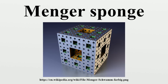Menger showed, in the 1926 construction, that the sponge is a universal curve, in that every curve is homeomorphic to a subset of the Menger sponge, where a curve means any compact metric space of Lebesgue covering dimension 1. This includes trees and graphs with an arbitrary countable number of edges, vertices and closed loops, connected in arbitrary ways.